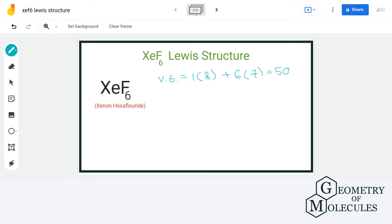Now let us see the arrangement of atoms. For that we will put xenon in the center and arrange fluorine atoms around it, somewhat like this.